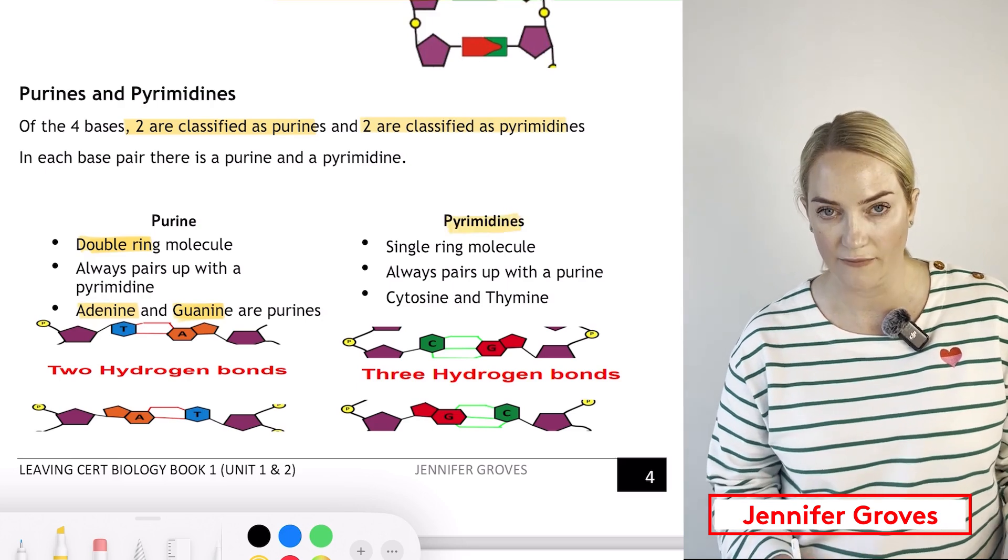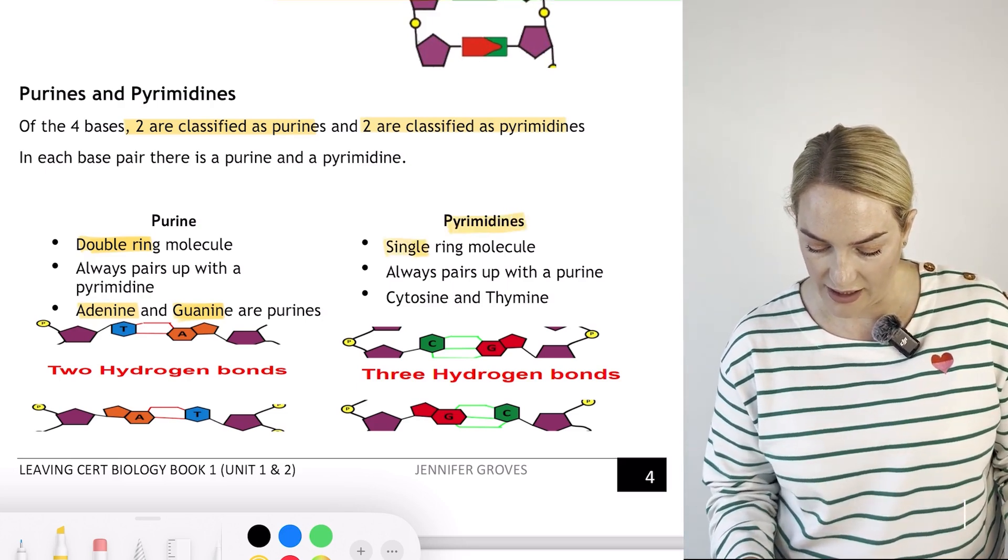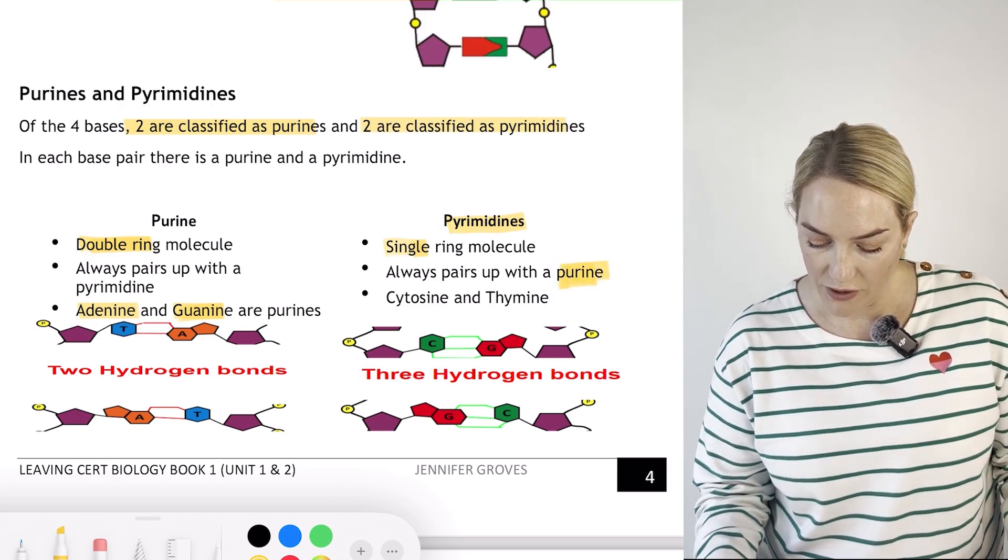Your pyrimidines are single-ring molecules. You can see here they'll always pair up with a purine - cytosine and thymine.